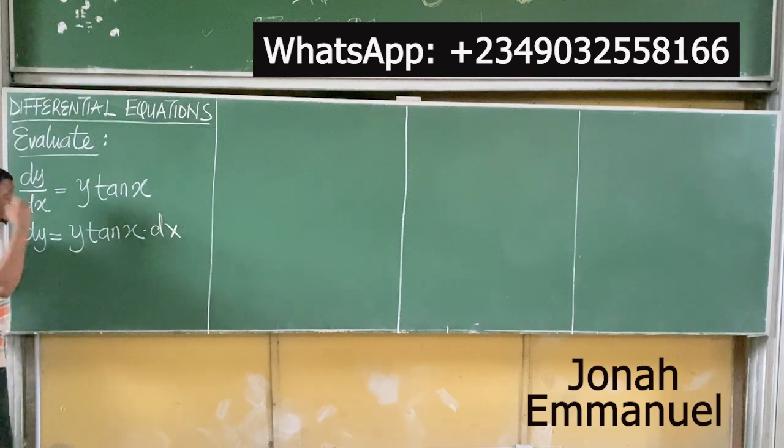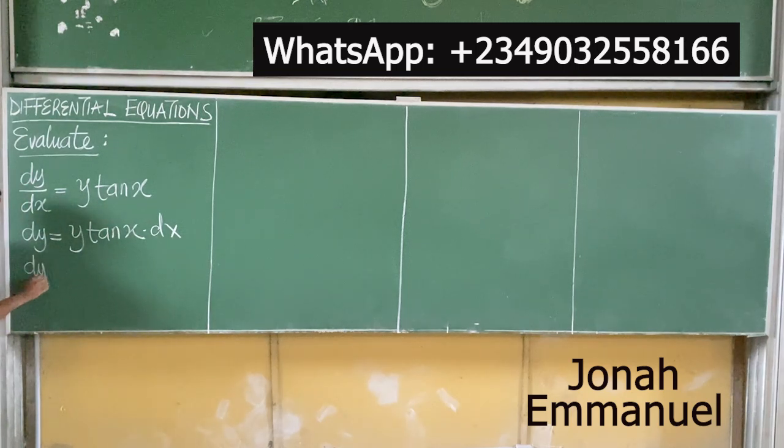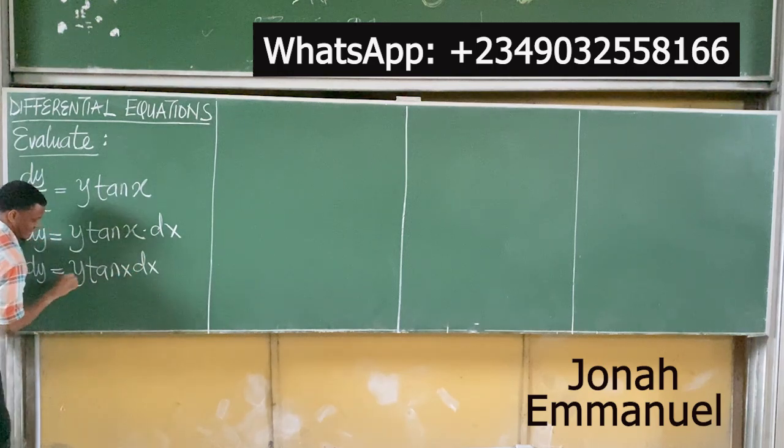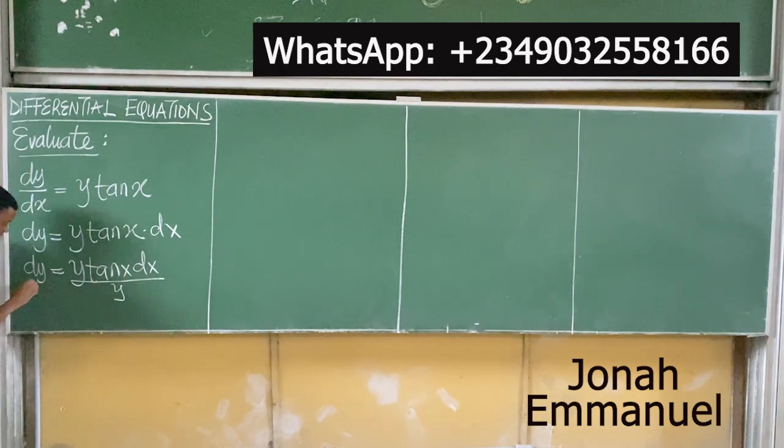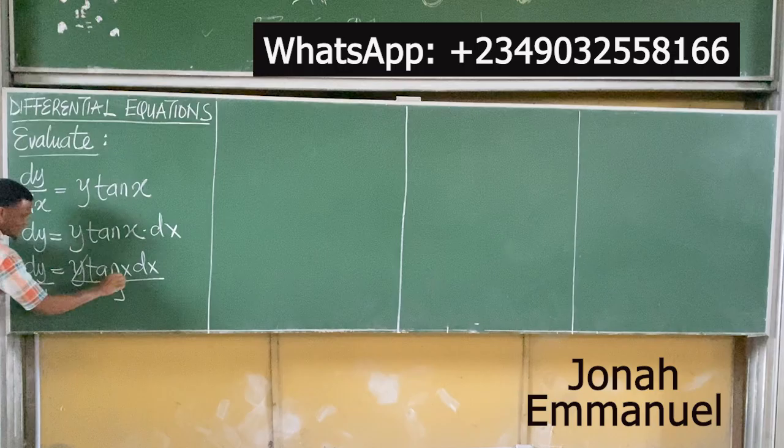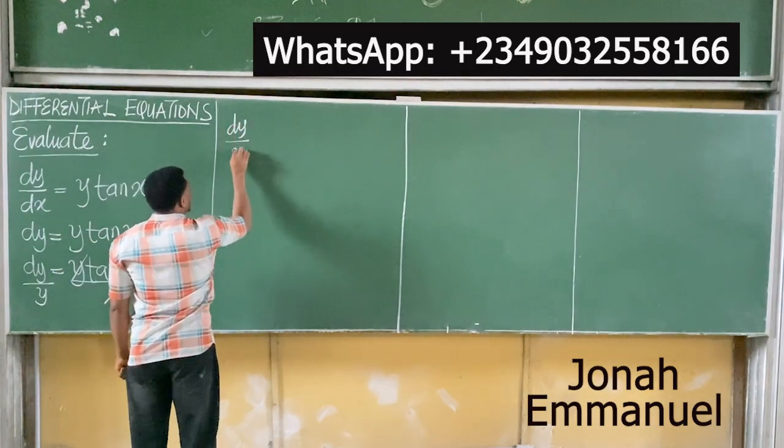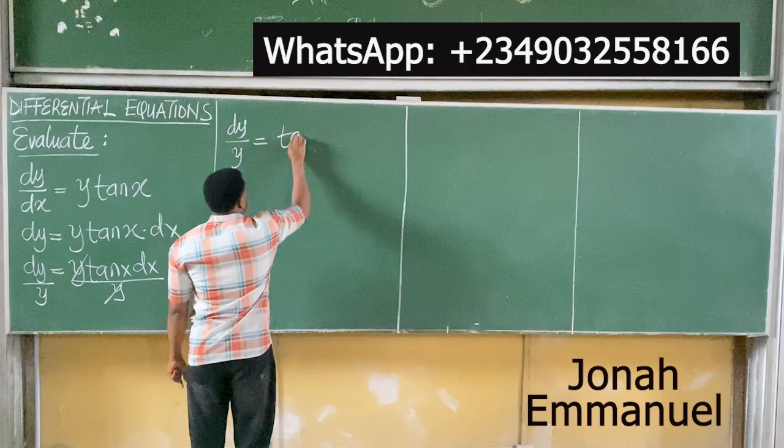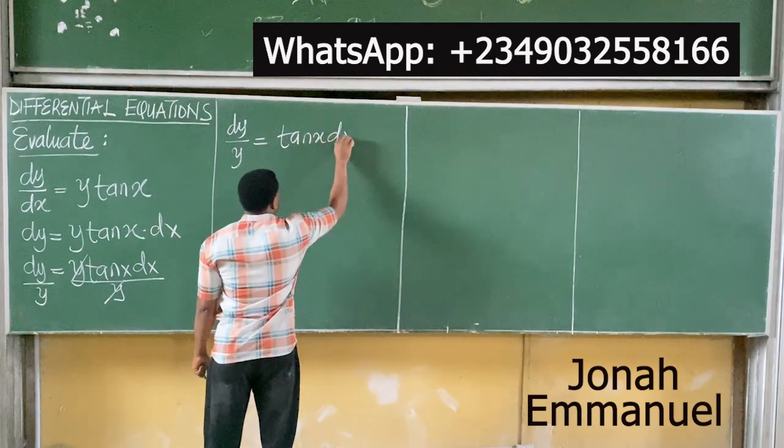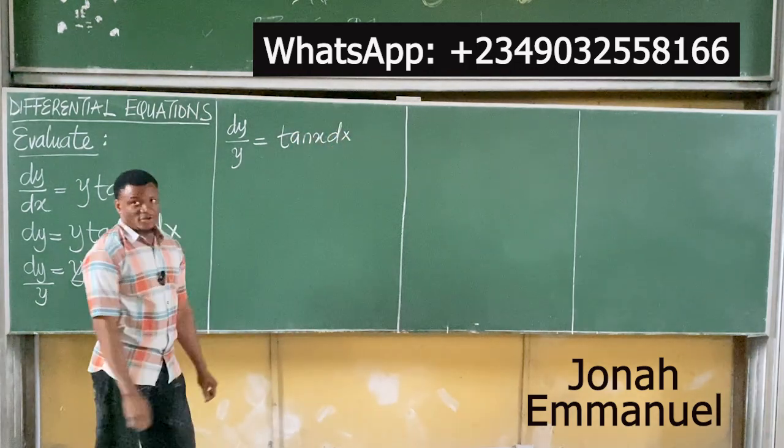My next task now is to move this y over here. And to do that, I will divide by y. If I divide by y, I have dy = y*tan(x)*dx. Divide this by y. Divide this by y. This cancels this. So I have dy/y = tan(x)*dx.